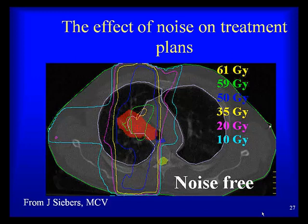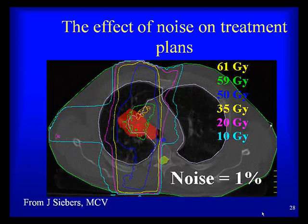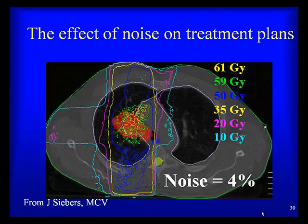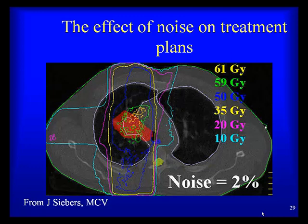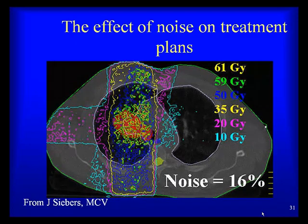Monte Carlo treatment plans have inherent statistical noise depending on the number of particle histories simulated. A noise-free Monte Carlo runs many millions of histories. At 1%, 2%, and 4% noise levels, plans become progressively noisier. Typically, Monte Carlo plans have about 2% noise, which is considered a good acceptable noise level clinically. At 16% noise, the plan would not be clinically useful. In commercially available photon algorithms, only Monte Carlo approaches have this noise characteristic.